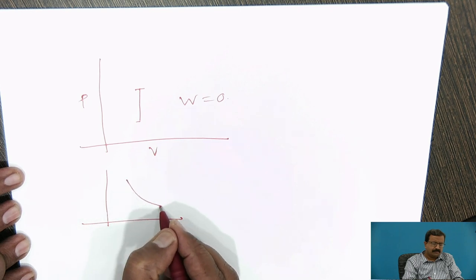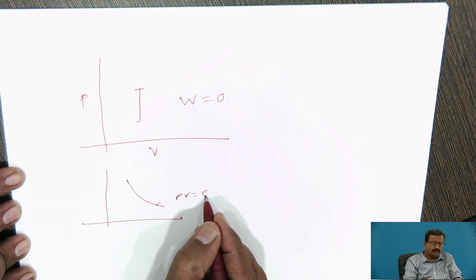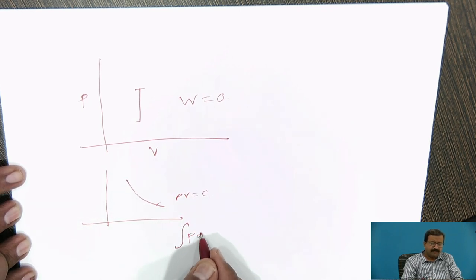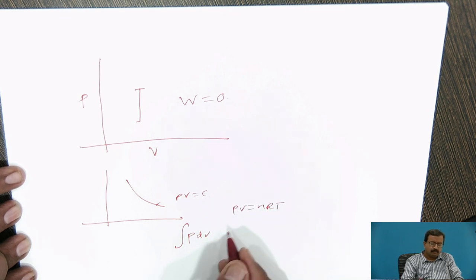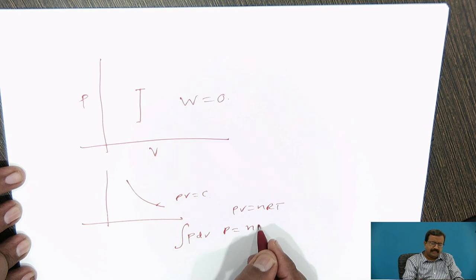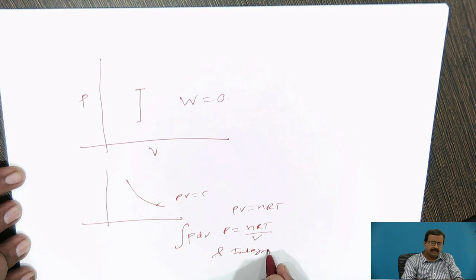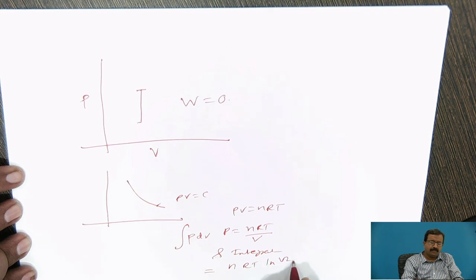For isothermal process, this is pv equals constant. You can integrate p dv, you know that pv equals nRt, put the value of p equals nRt upon v, and integrate. You will get the expression, which you already know, that is nRt log of v2 by v1.